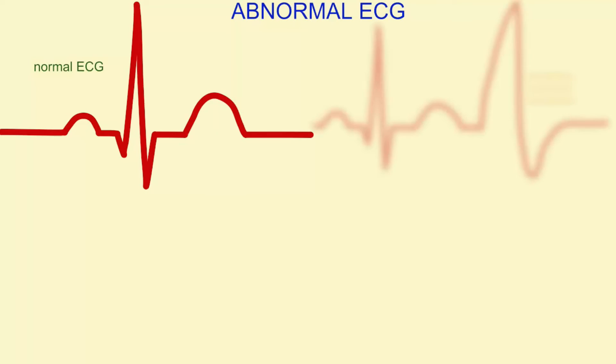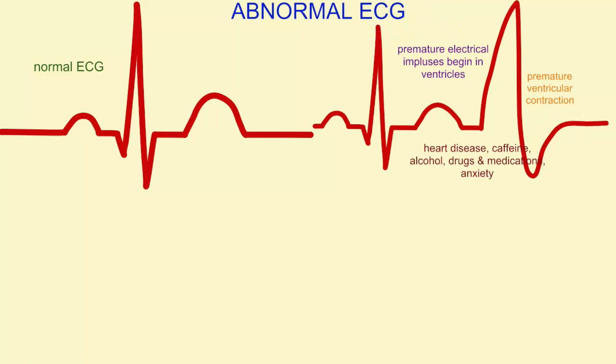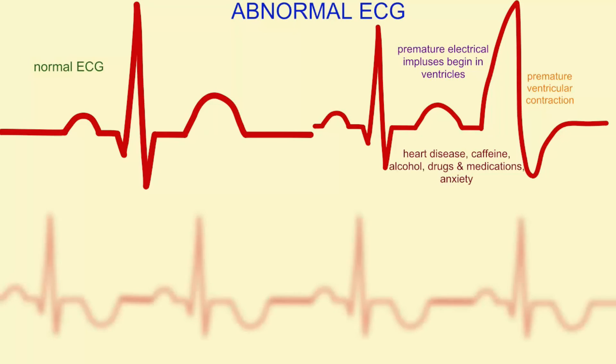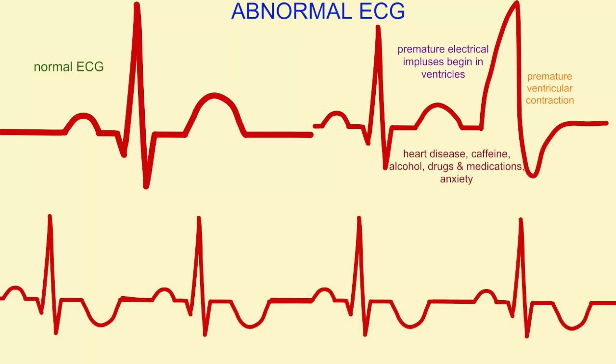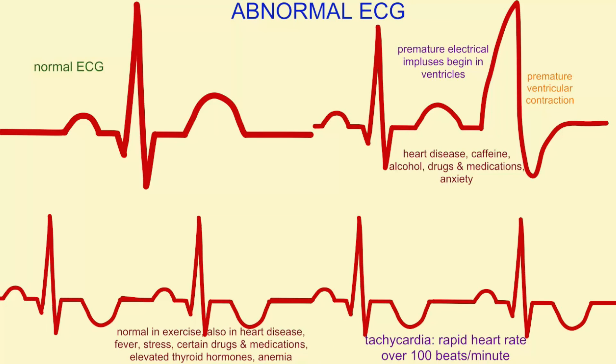There are other abnormalities which can be detected with ECGs as well, such as premature ventricular contractions — if electrical impulses begin in the ventricles — and tachycardia, an extremely rapid heart rate, and other things. These ECGs are thus very useful because they lessen the need for exploratory surgeries. Through this non-invasive technique, a physician has a good idea of what might be troubling their patient.